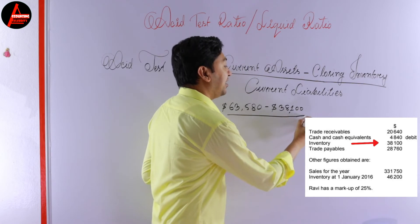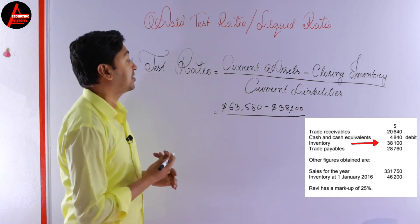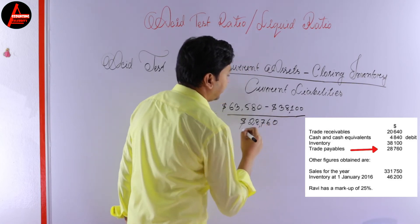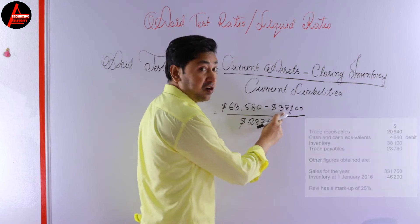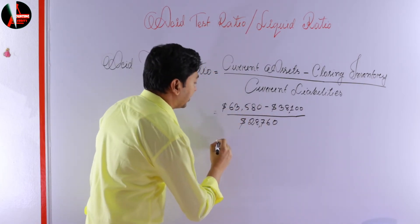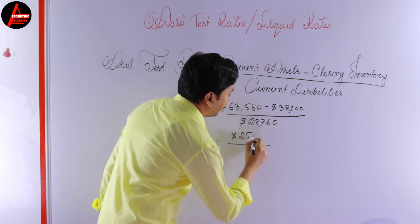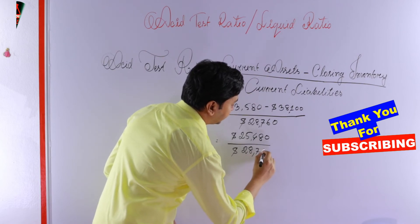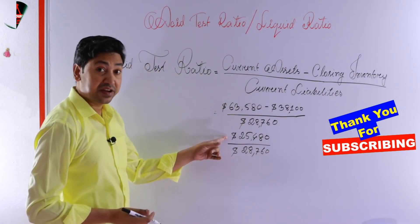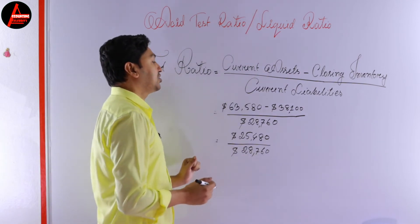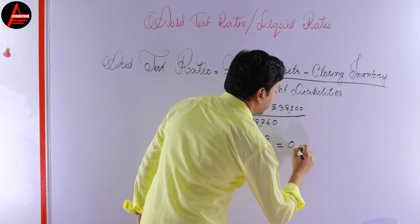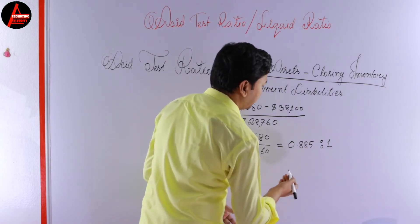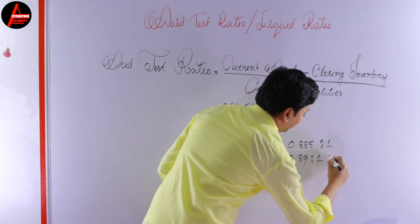In the question we have only one current liability, which is trade payables, with a value of $28,760. Now let us subtract the closing inventory of $38,100 from the total current assets of $63,580. That gives us $25,480. We then divide this by the current liability of $28,760. The result is 0.885 to 1, which we can round up to 0.89 to 1.